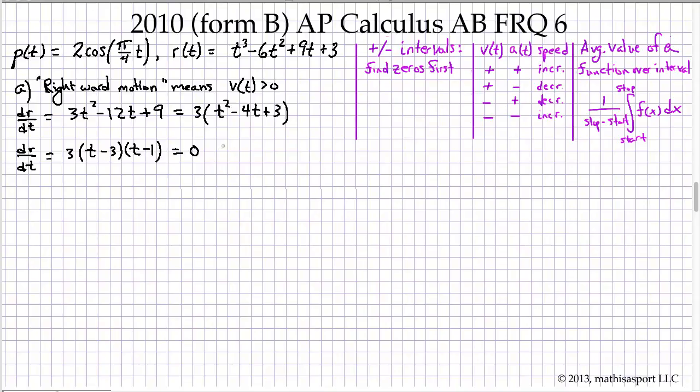So we have zeros at t equals 1 and 3. Now this function in general is an upward pointing parabola. I can take advantage of that knowledge. And the fact that the zeros are at 1 and at 3 to now say that the particle is moving to the right when the velocity is positive.